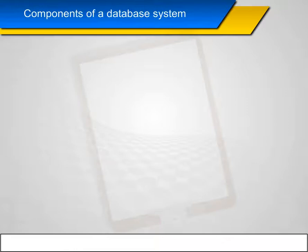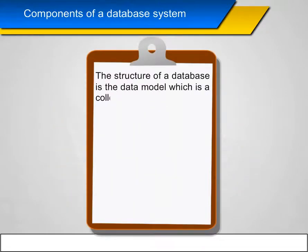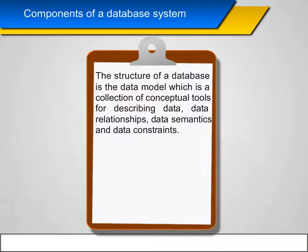Components of a database system: The structure of a database is the data model, which is a collection of conceptual tools for describing data, data relationships, data semantics, and data constraints.